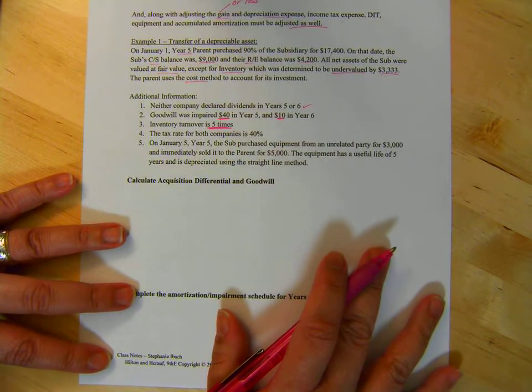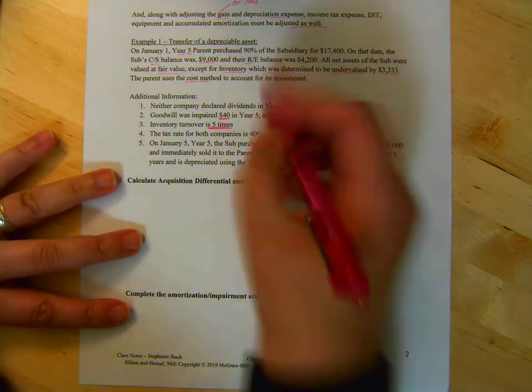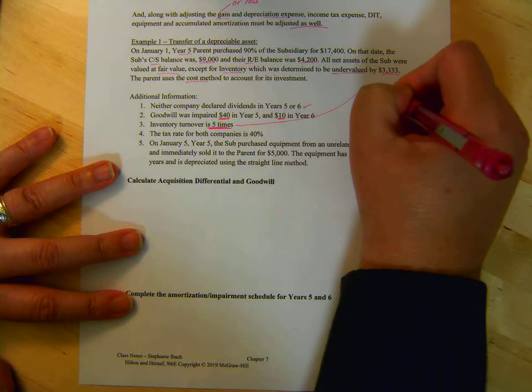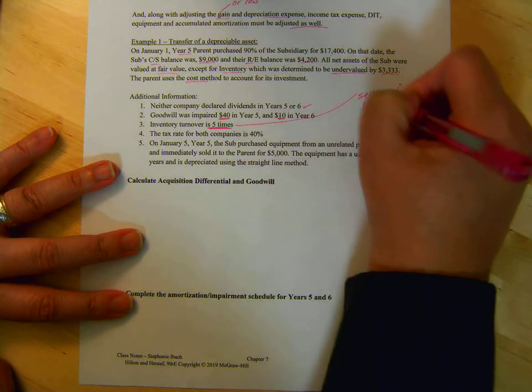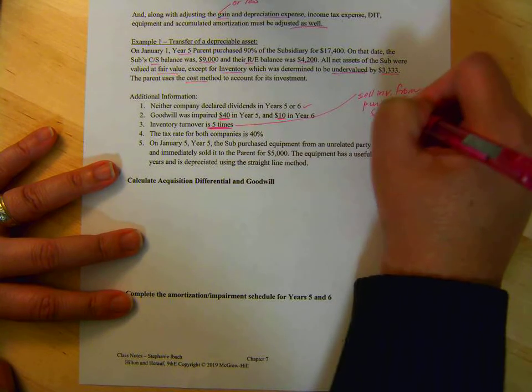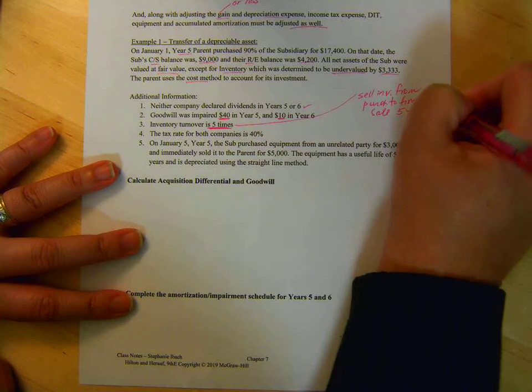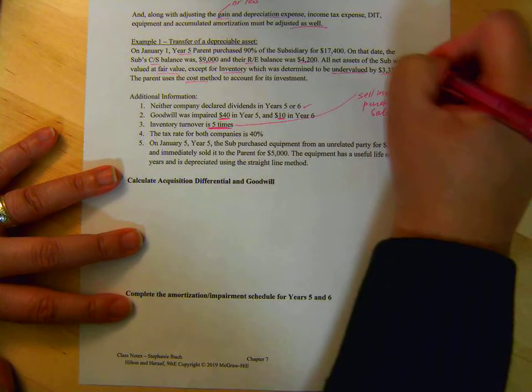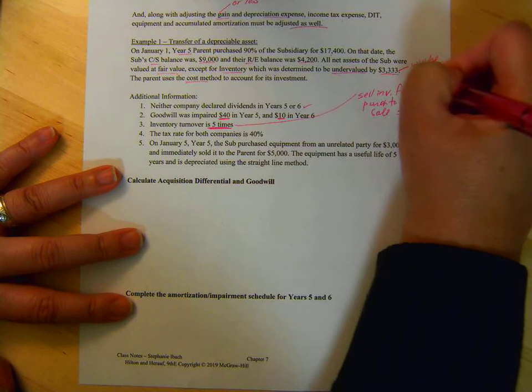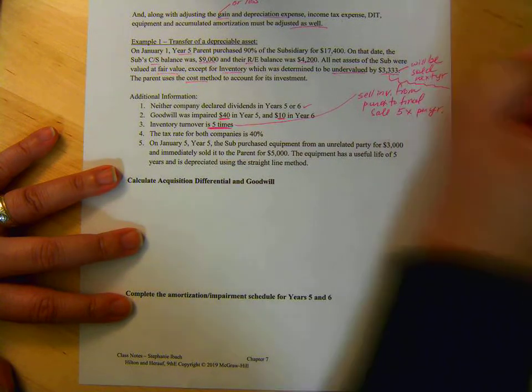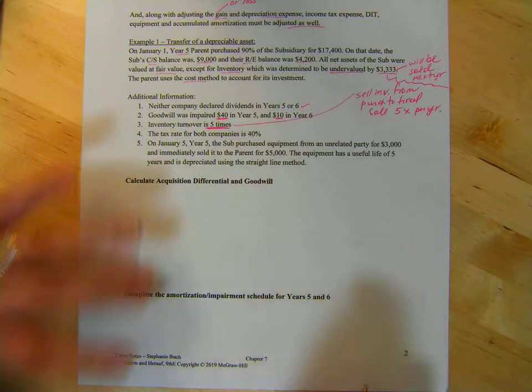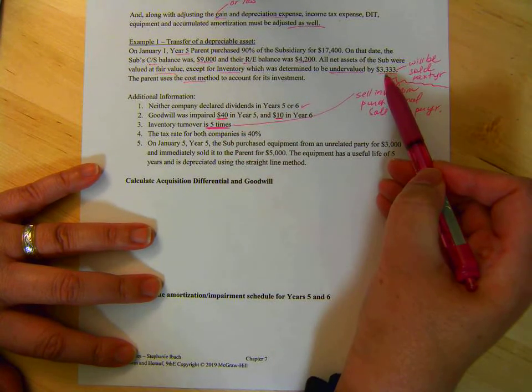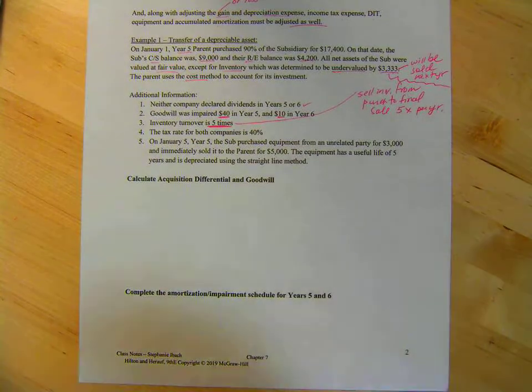Inventory turnover is 5 times. Why are they telling us inventory turnover? Well, what does inventory turnover mean? It means you will sell inventory from purchase to final sale 5 times per year. So, are we going to sell this the next year? Yes. Okay, so remember we said we used FIFO? Well, we don't have to assume when you're actually told inventory turnovers 5 times because obviously of inventory at the beginning it's going to be sold because you go through all your inventory 5 times a year.